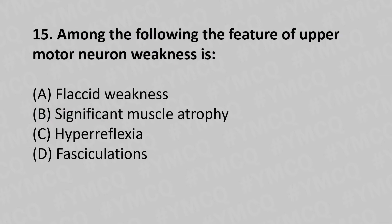Moving to our fifteenth question. Among the following, the features of upper motor neuron weakness is: Option A, flaccid weakness. Option B, significant muscle atrophy. Option C, hyperreflexia. Option D, fasciculations. And the answer is Option C, hyperreflexia.